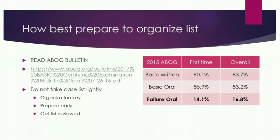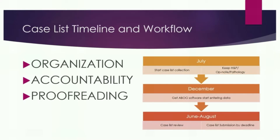Organization is really the key — being prepared early and getting your case list reviewed. Here's a case list time flow: you start case list collection the year before in July. The best way to do this is organization. Keep an H&P, op note, and pathology. One of the things I like to do when I do my dictations on my op notes — I use EPIC — is to put in clinical indications.